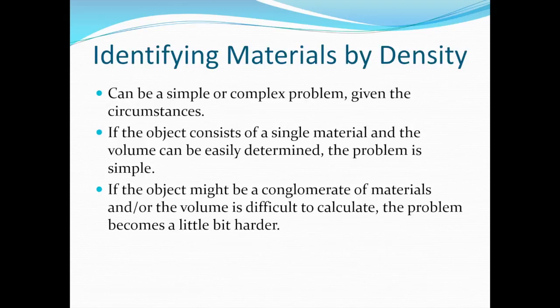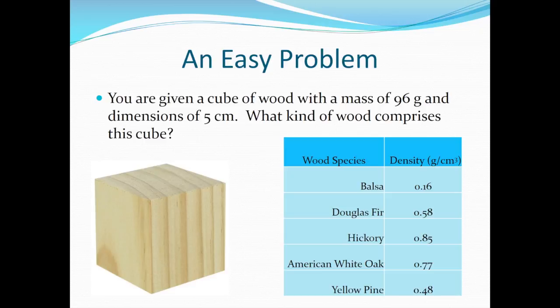Let's start with an easy problem. You're given a cube of wood, with a mass of 96 grams, and dimensions of 5 centimeters. Use the table below to determine what kind of wood this cube is made of.